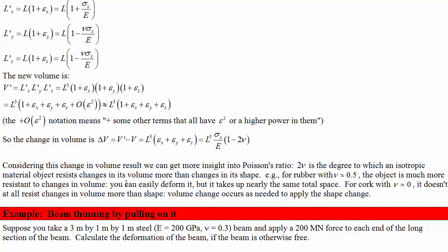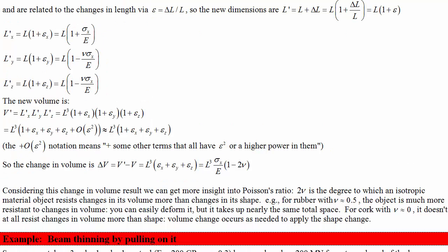Rubber's resistance to volume changes — the bulk modulus — is much higher than its Young's modulus, which is resistance to shape change. For cork, with nu equals 0, it doesn't resist volume changes more than shape changes. You can compress or extend it in any one axis and the volume changes just as needed for that one axis.